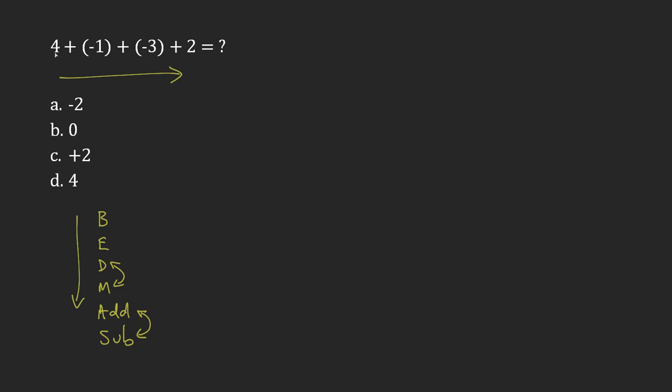So 4 plus negative 1 is the same as... let me do it this way: 4 plus (-1) is the same as 4 minus 1. Why would it be the same as 4 minus 1?